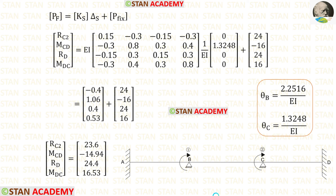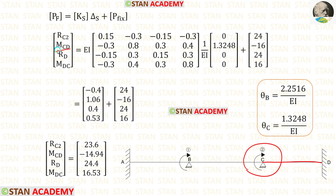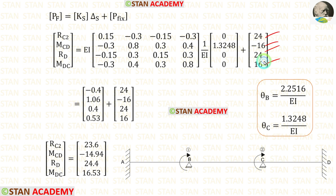Now let us find the fixed end moments and reactions in span CD. For span CD, we apply the element stiffness matrix. The second coordinate is at point C with moment MCD, for which we apply the value of θC, entering 0 for the other values. After entering the fixed end movements and reactions and completing the calculation, we get the final reactions and moments in span CD.